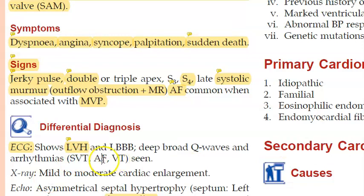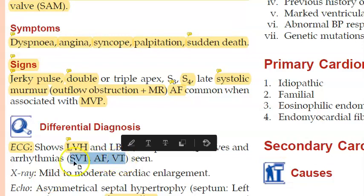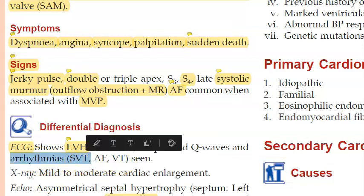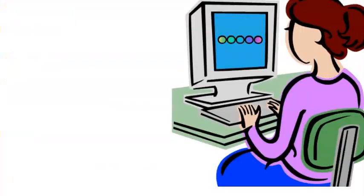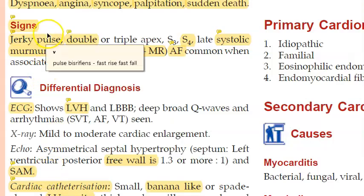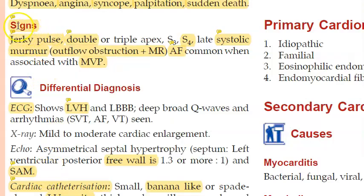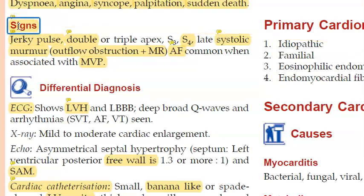These patients can have arrhythmias including supraventricular tachycardia, atrial fibrillation, and ventricular tachycardia. Now let's look at the signs in HOCM.